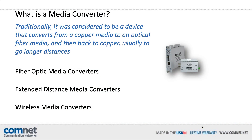Let's start with defining a media converter. Traditionally, it was considered to be a device to convert from copper media to an optical fiber media and then back to copper, usually to send the data longer distances than standard copper cabling can handle. But in today's IP-centric world, media converters work on lots of different types of media, and ComNet makes one for each.